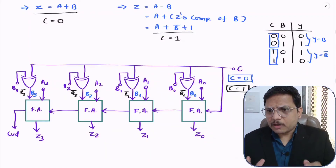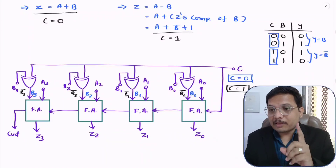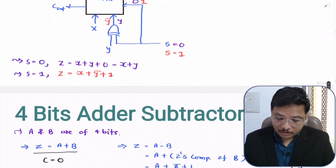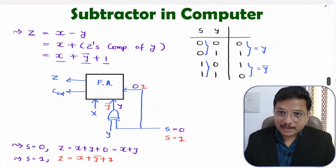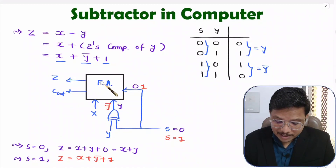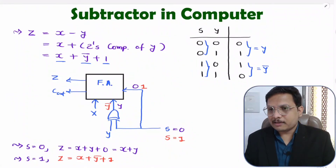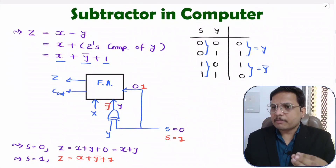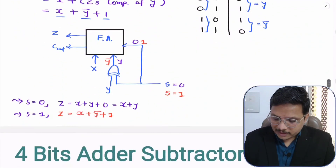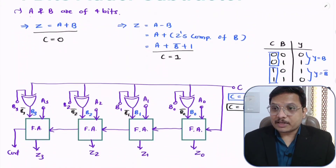This is how the 4-bit adder subtractor circuit works. I have already made a previous video for 1-bit subtraction, which was also built using a full adder. If you go through that video it will give you more clarity on how exactly we are using the property of the XOR gate — the same thing I have done here for 4-bit subtraction.